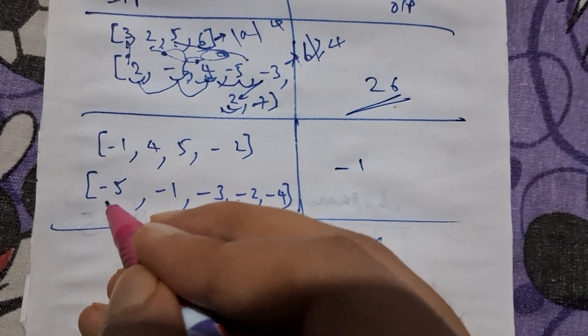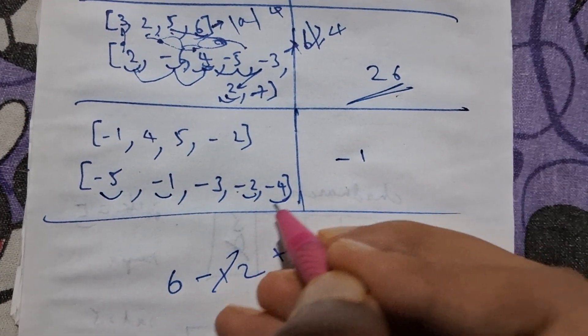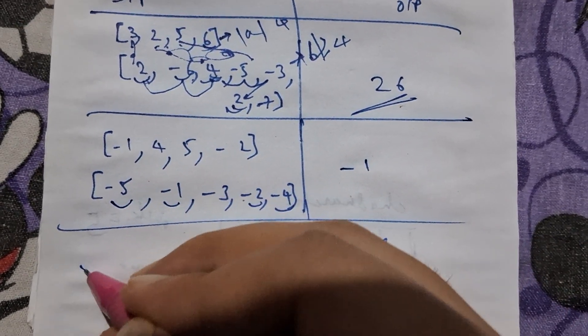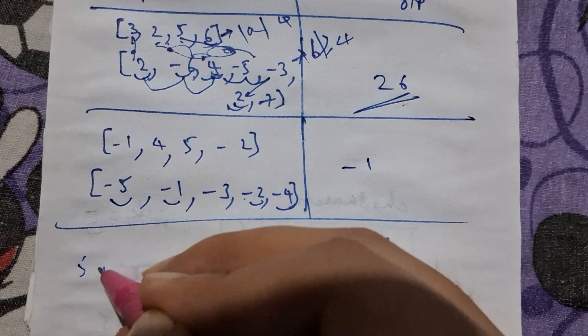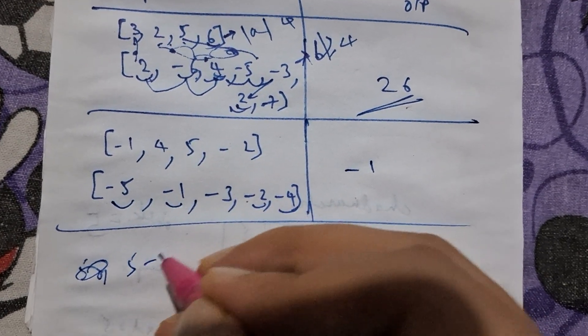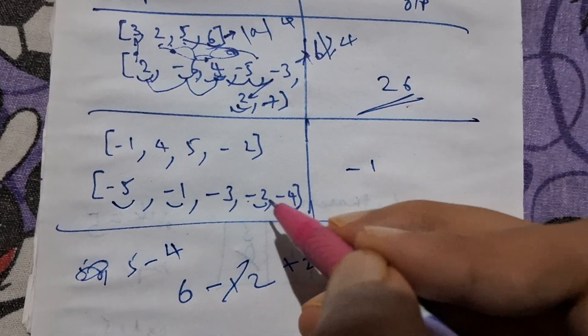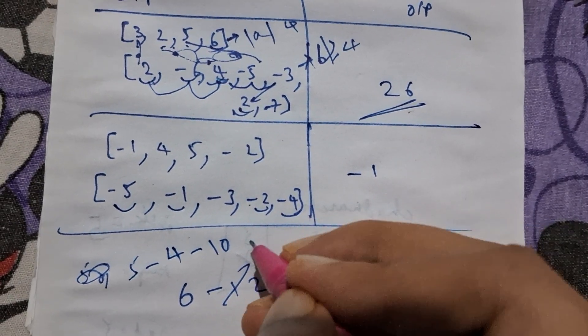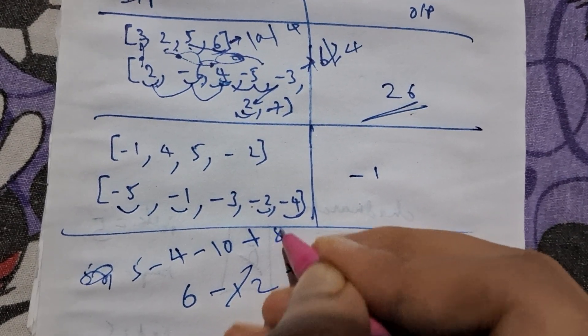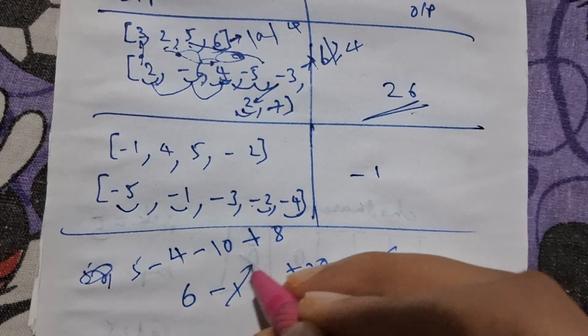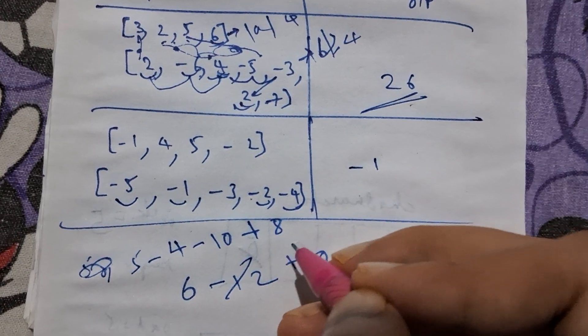For this also, you can take these elements. Minus 5 times minus 1 is 5, minus 4 into minus 1 is 4, 5 into minus 2 is minus 10, and minus 2 into minus 4 is plus 8. Basically 5 plus 4 is 9 minus 10 is minus 1, so that is how we get the answer.